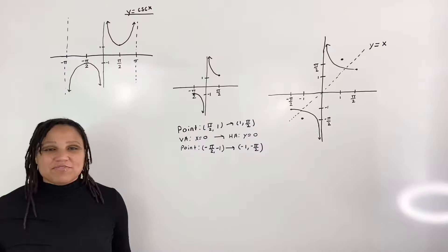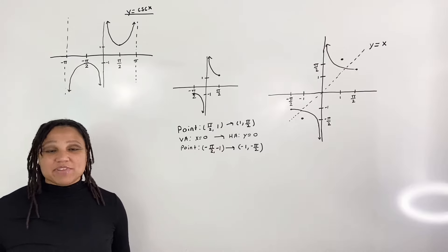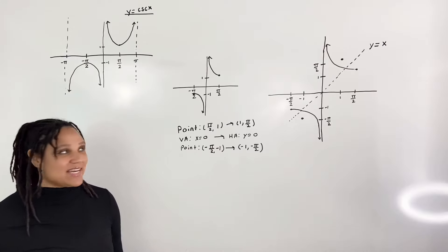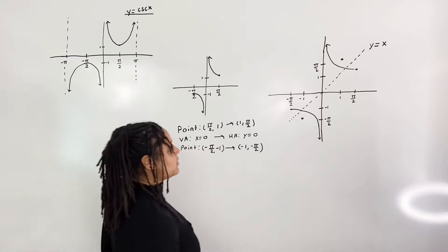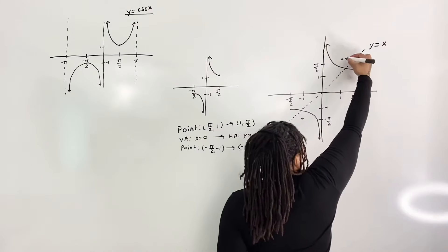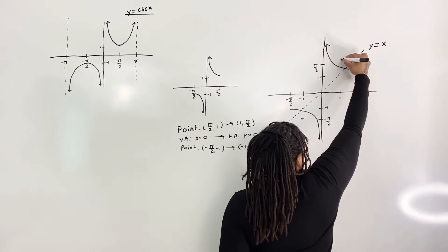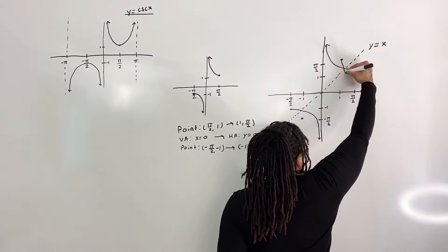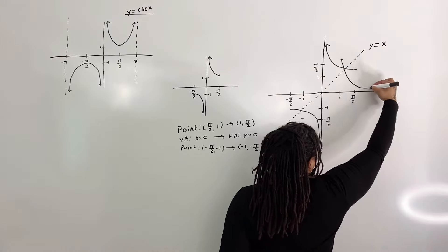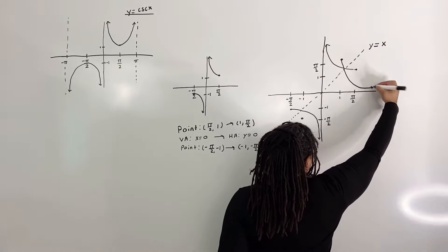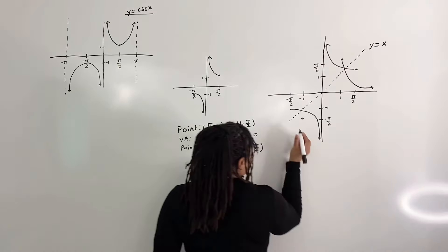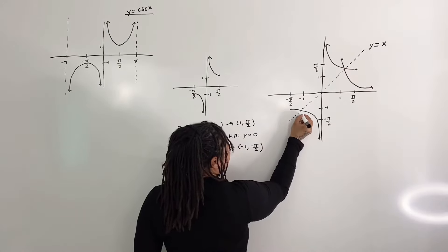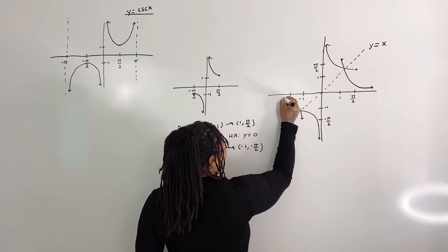Step 5: Draw the new graph by reflecting about the line y equals x. So I'm going to come here and reflect, and come here and reflect.